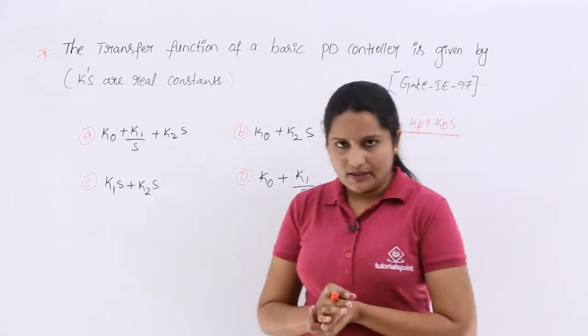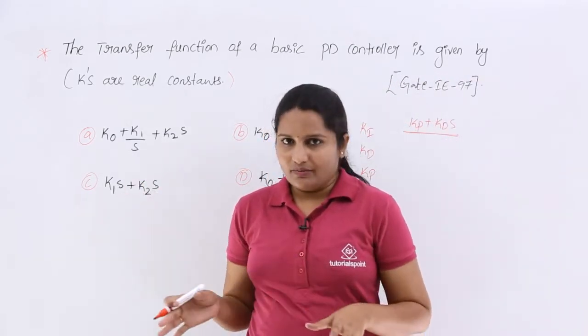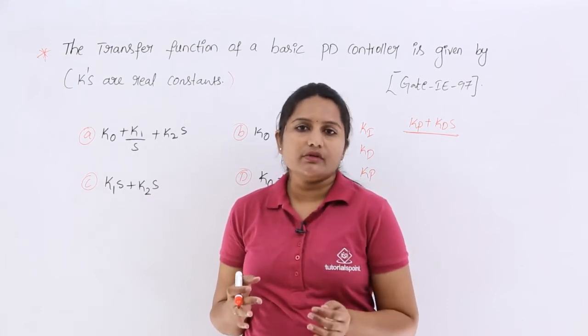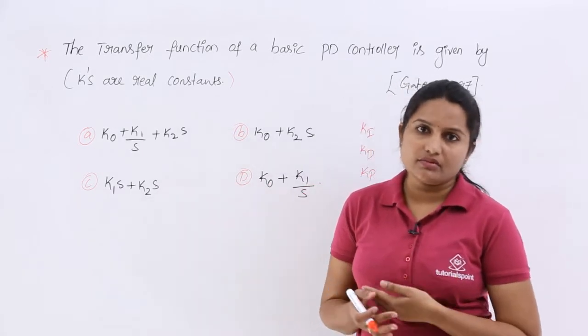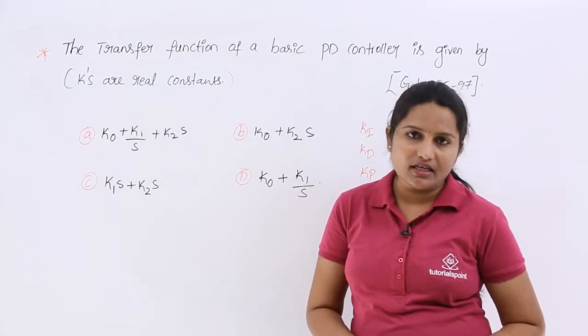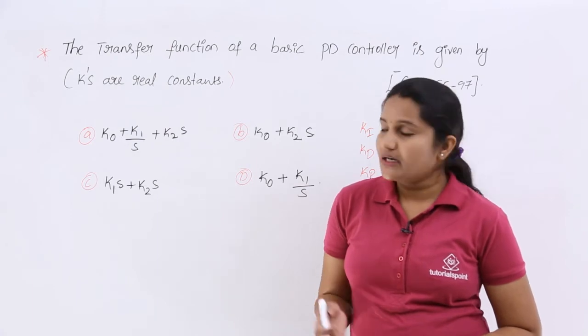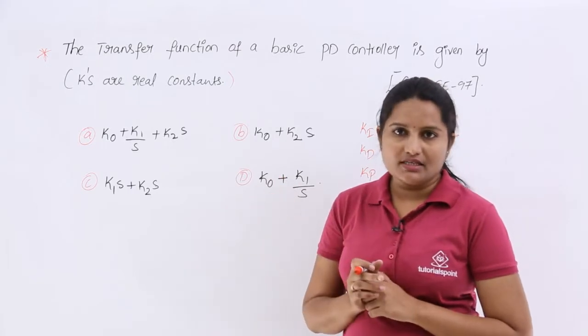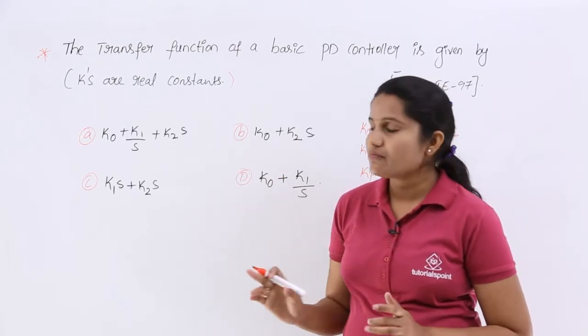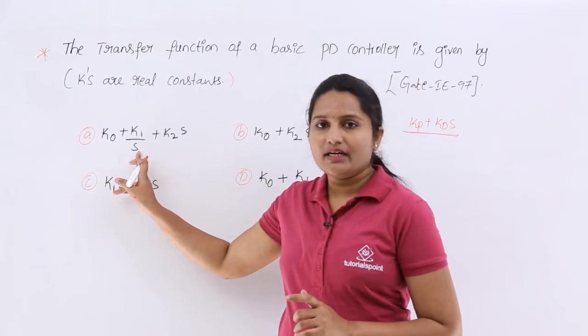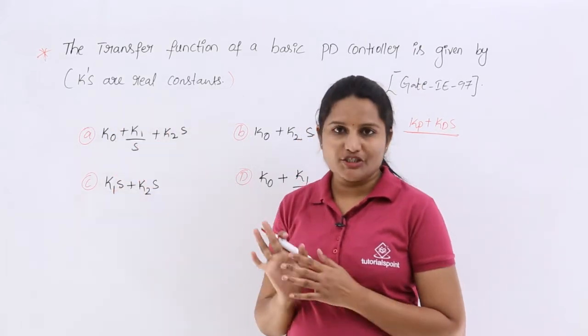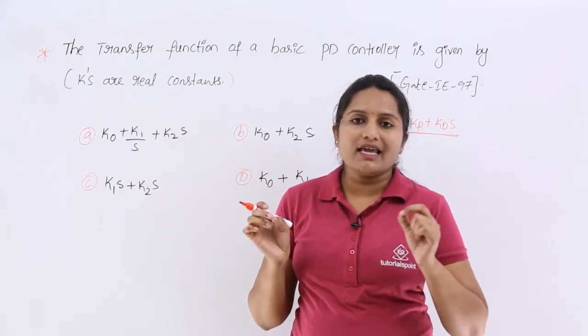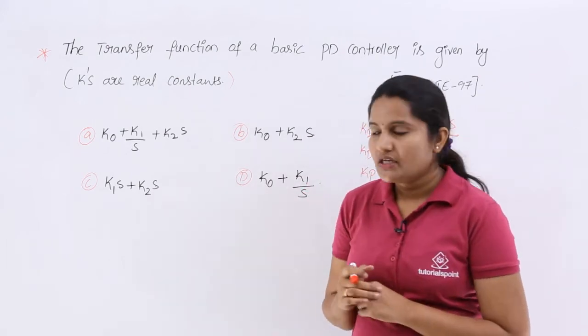Now, you can see, if they are given in any name, they can change the variables. Sometimes, they will give K0. Sometimes, we consider like Kp, Ki and Kd. But here, they consider K0, K1, K2. In this type of cases, do not confuse. If you are having S in denominator, that is related to integration. If you are having S in multiplication, that K is related to differentiator.